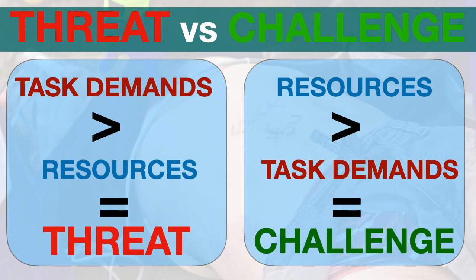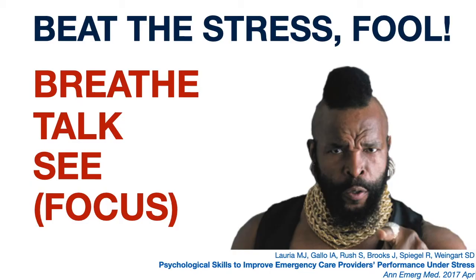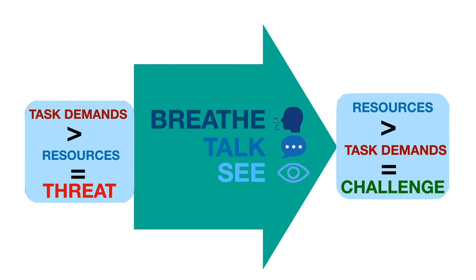The way we do that is with Mike Laurier's Breathe Talk C. Breathe Talk C reappraises a threat as a challenge by slowing down your breathing — the only part of your autonomic nervous system you can consciously control — which brings down tachycardia and feelings of panic. Talk refers to positive self-talk: 'I've got this. We're a good team. We are trained for this. We have the resources.' C refers to visualisation — seeing in your mind's eye the successful completion of a task or procedure, particularly useful for practical procedures like intubation.